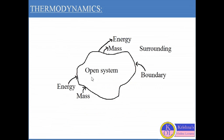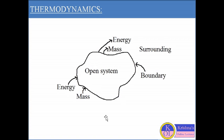Another system is the open system. In an open system, mass can transfer from the system to the surrounding and from the surrounding into the system through the boundary, and energy transfer into and out of the system is also possible. An example of an open system is an air compressor, where air enters at low pressure and exits at high pressure, with energy transfer across the system boundary.